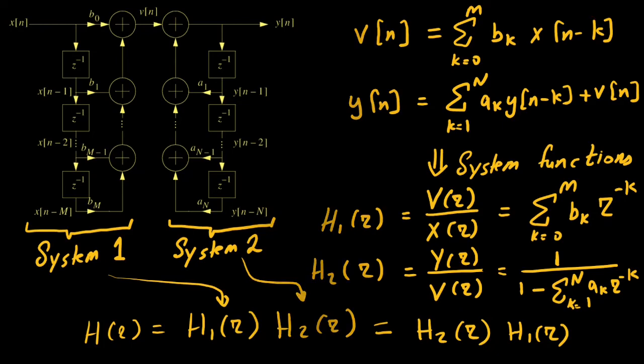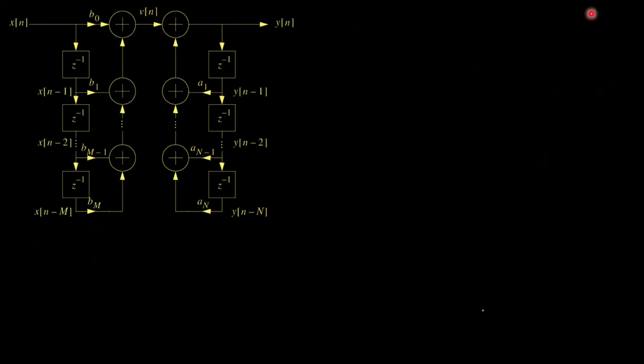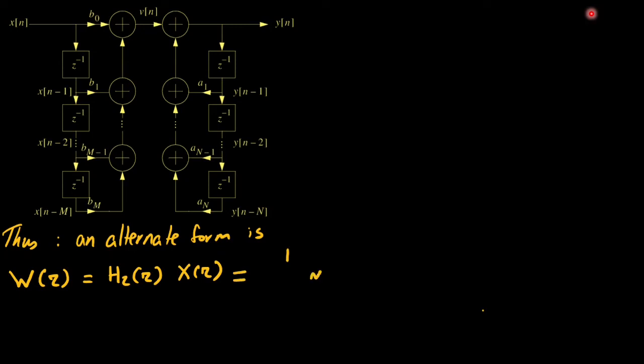Based on this commutation, consider w of n as the output of first commutated that is h2 of z system then its z-transform is w of z which is h2 of z times the input x of z. And this is linked with the poles in the system. That is 1 over 1 minus summation from 1 to n ak z to the power minus k.